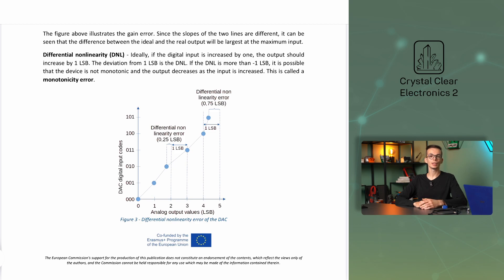Now let's look at DNL, which stands for Differential Non-Linearity. Ideally, if the digital input is increased by 1, the output should increase by 1 LSB. The deviation from 1 LSB is the DNL. The figure shows that the analog output does not change proportionally as a function of the digital input. For every unit change in input, there is not exactly one LSB change in output signal. The extent of the deviation is given in the DNL.